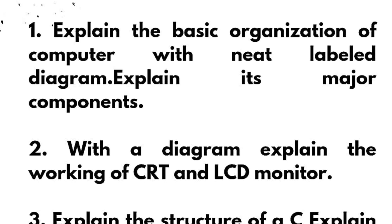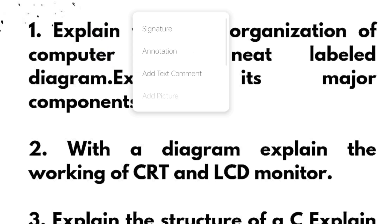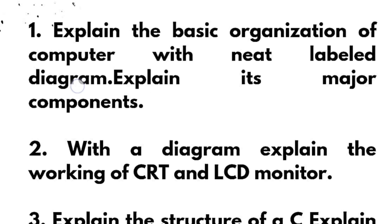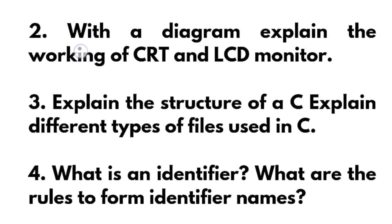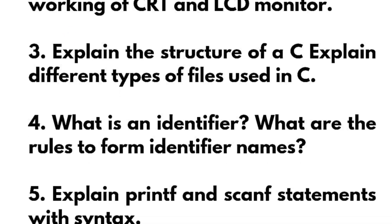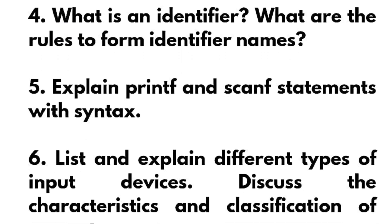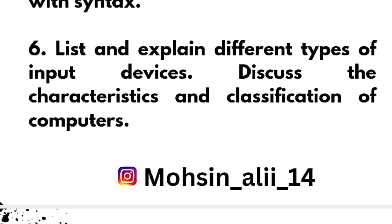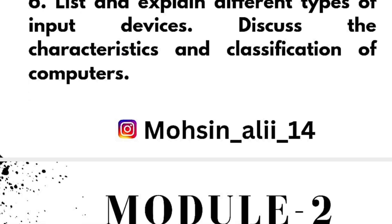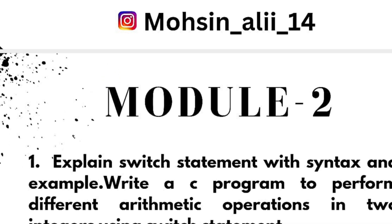This is the first module where we have six questions. Explain the basic organization of a computer with a neat labelled diagram and explain its major components. With a diagram, explain the working of CRT and LCD monitors. Next, explain the structure of C and explain different types of files used in C. What is an identifier and what are the rules to form identifier names? Explain printf and scanf statements with syntax. List and explain different types of input devices. Discuss the characteristics and classification of computers. This is all about the first module — it is a theoretical module, so try to cover these six super important questions to get at least 14 marks.